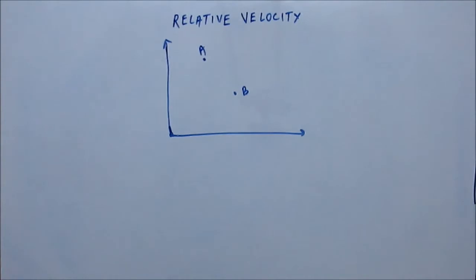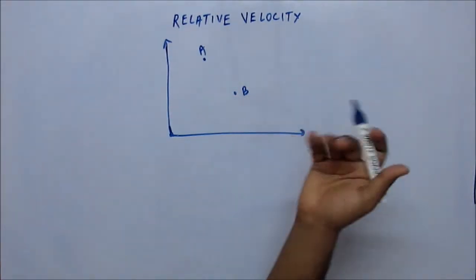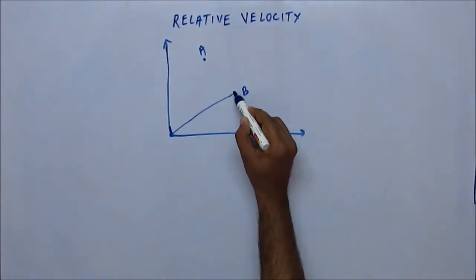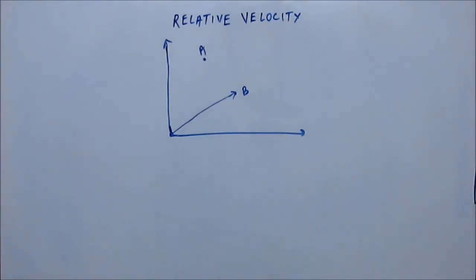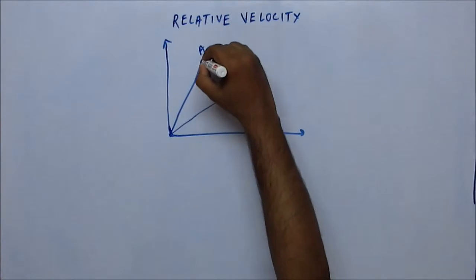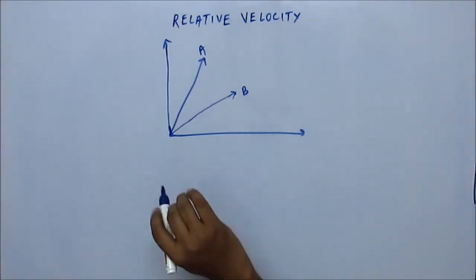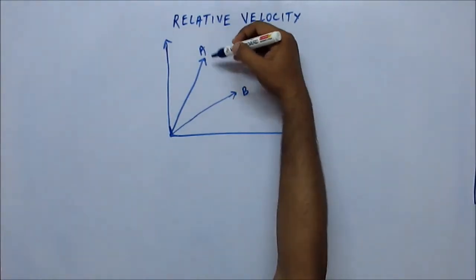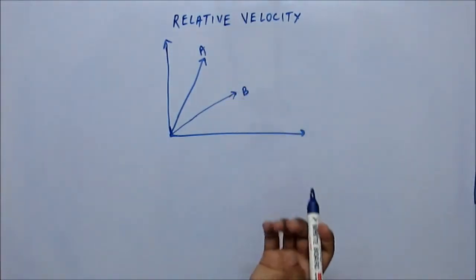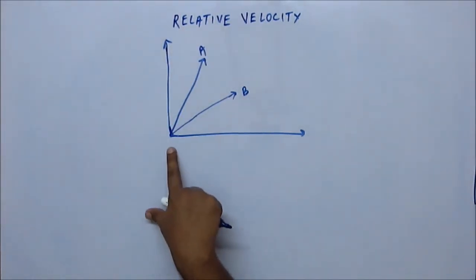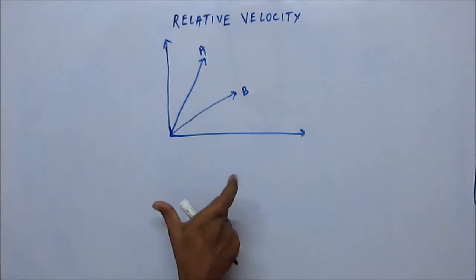Now body B is not stationary — it is moving. Both A and B are moving. At any point of time, the displacement of B with respect to O will be this vector — a position vector, that is a displacement vector — and similarly the displacement of A with respect to the origin is this vector. Now the displacement of A with respect to B would be a vector starting from B and ending at A, because the displacement of B with respect to origin is a vector starting from origin and ending at B.